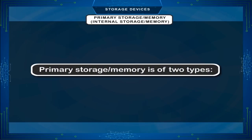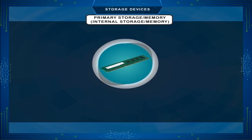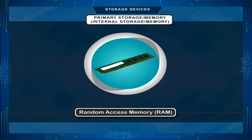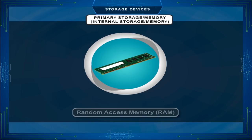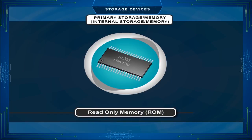Primary storage or memory is of two types: 1. Random access memory, and 2. Read only memory.